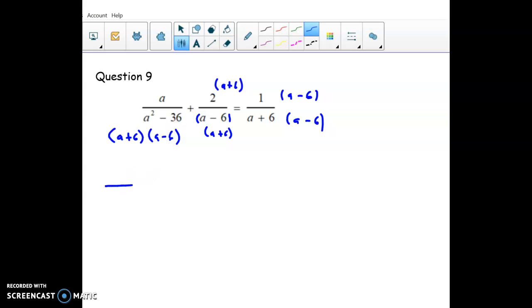So now all of them should have a denominator that is a plus 6 times a minus 6. And just to save a little bit of writing, because let's be honest, I'm lazy, I'm going to write the denominators as a squared minus 36.